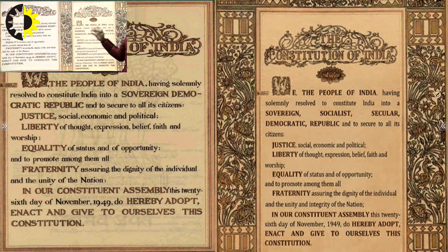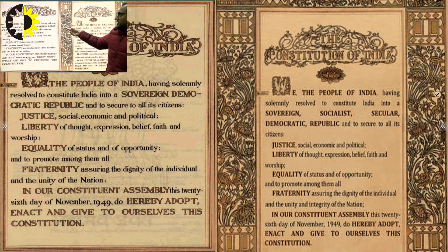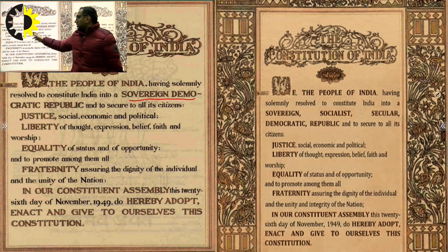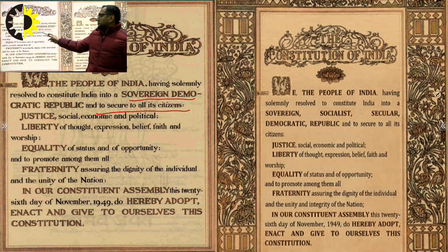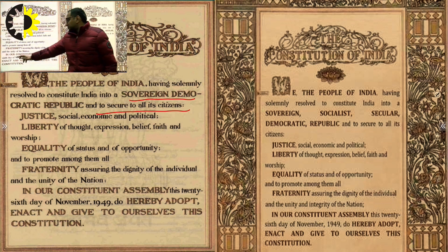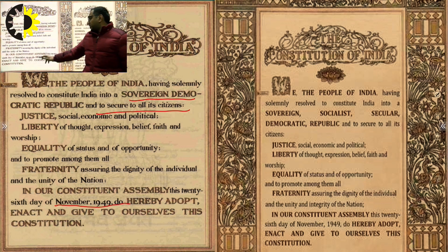The preamble of the constitution reads that the people of India, having solemnly resolved to constitute India into a sovereign democratic republic, shall ensure for all its citizens justice, liberty, equality, and freedom. These rights were given effect on the 26th day of November 1949 through the Constituent Assembly.